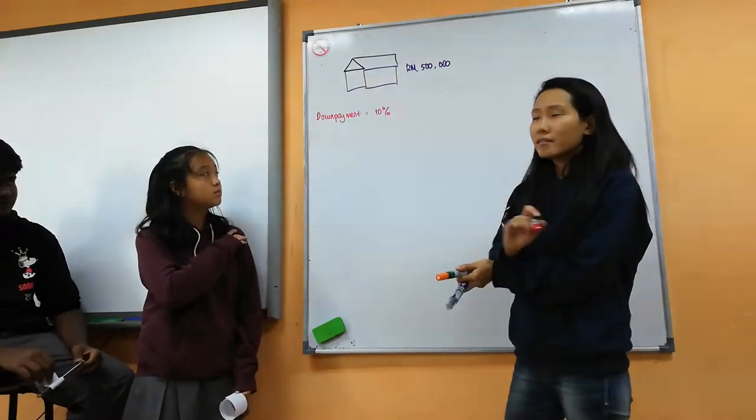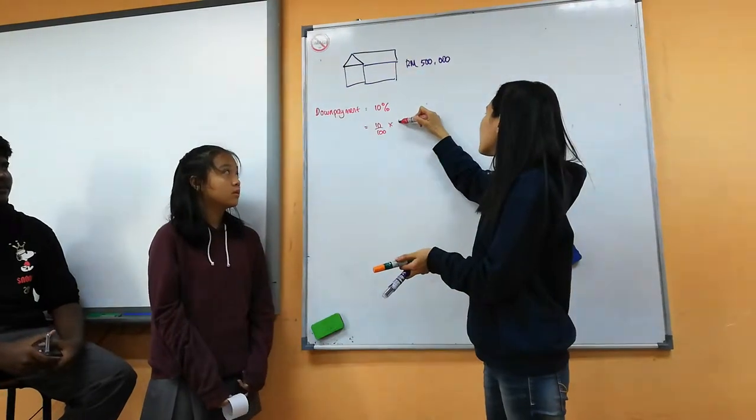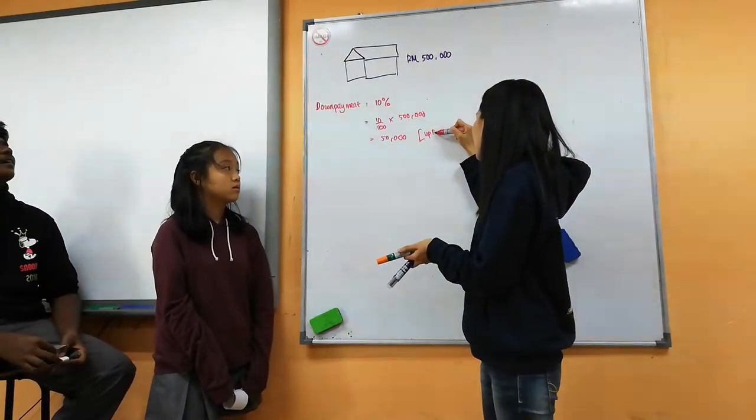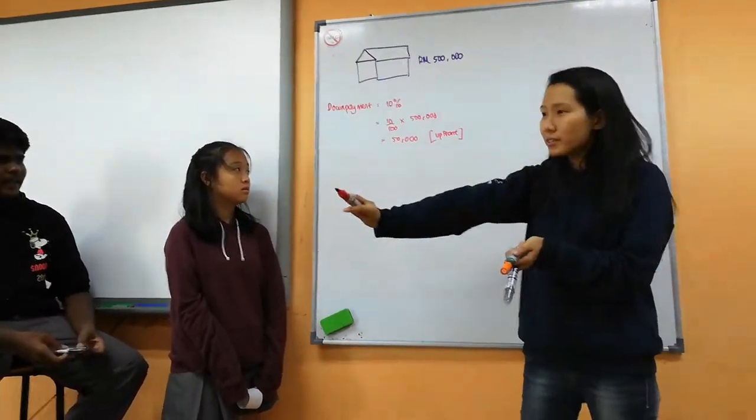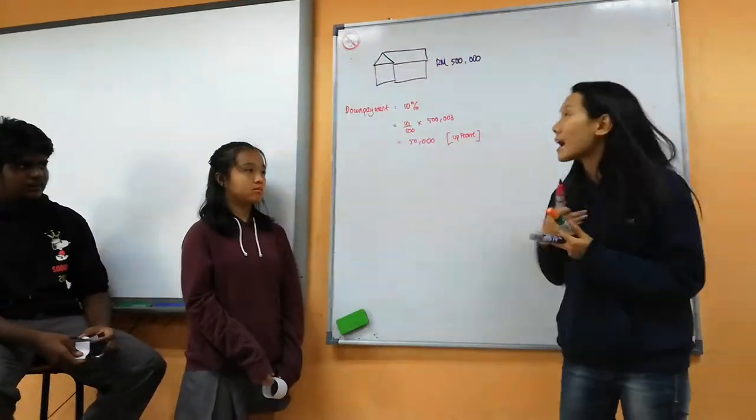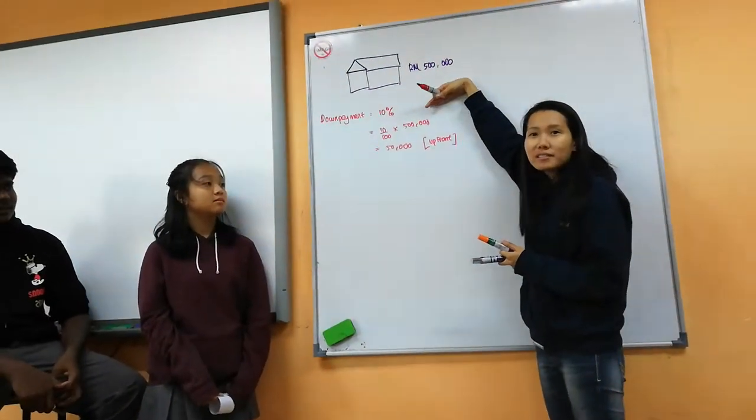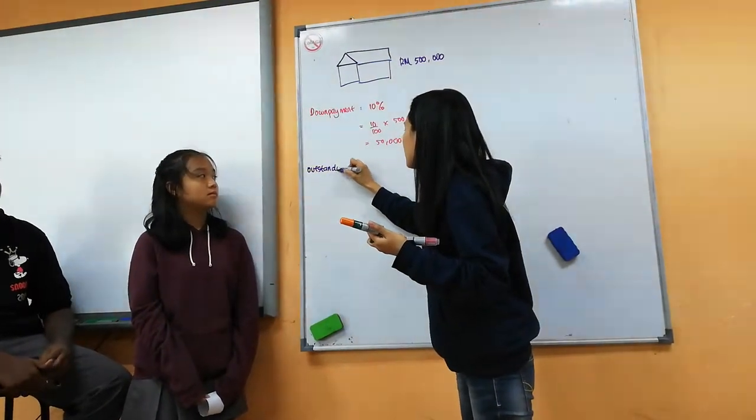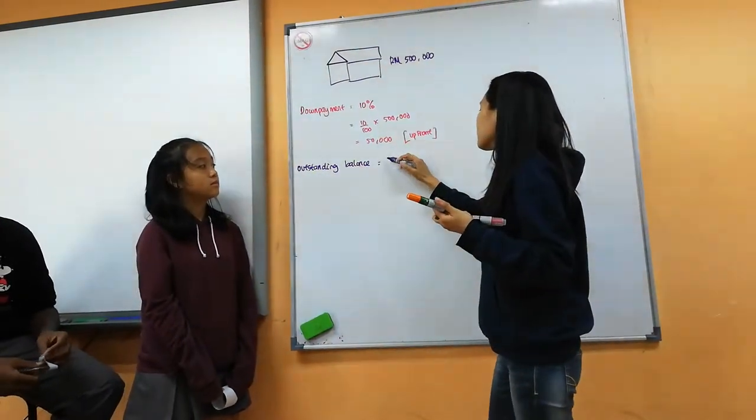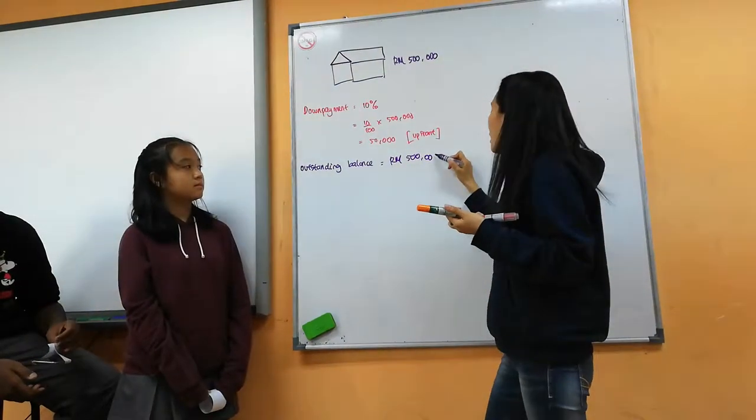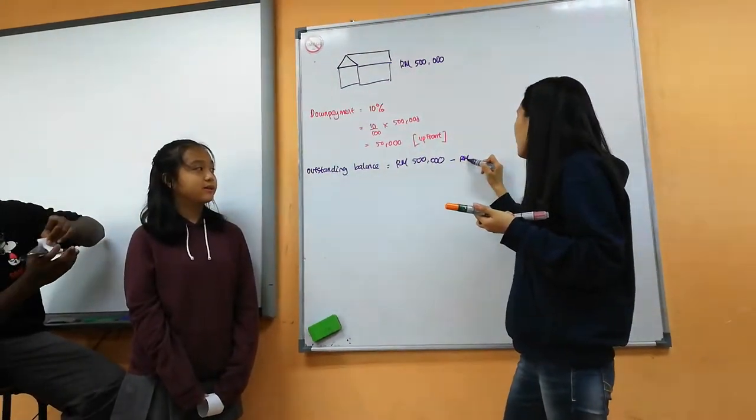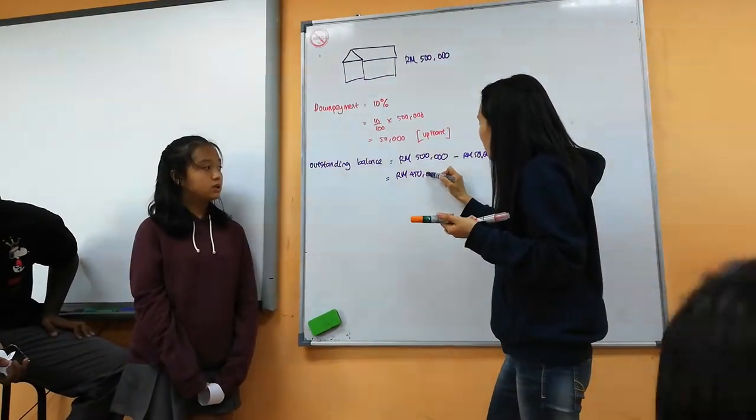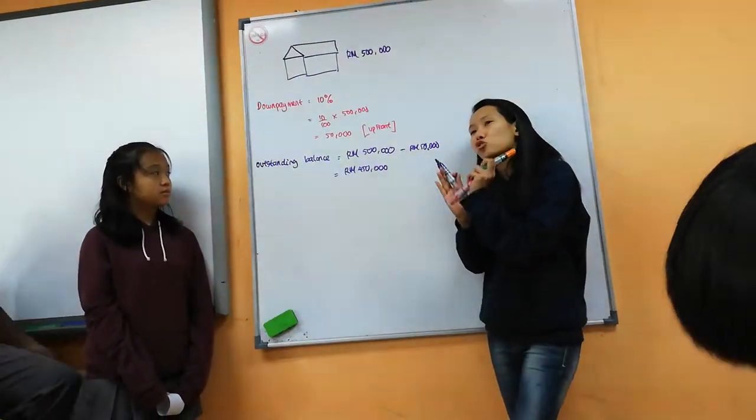So now let's say the down payment is 10%. How much is this? $50,000. 10% times $500,000. So this $50,000, you have to pay up front. Meaning you have to pay fresh. So now, in total, this is $50,000. And then I can stay in the house already. Even though I still have my outstanding balance. What is my outstanding balance? $450,000. Outstanding balance is your left over. $500,000, I take away $50,000. So my outstanding balance is $450,000. This one is the one that I need to pay slowly.